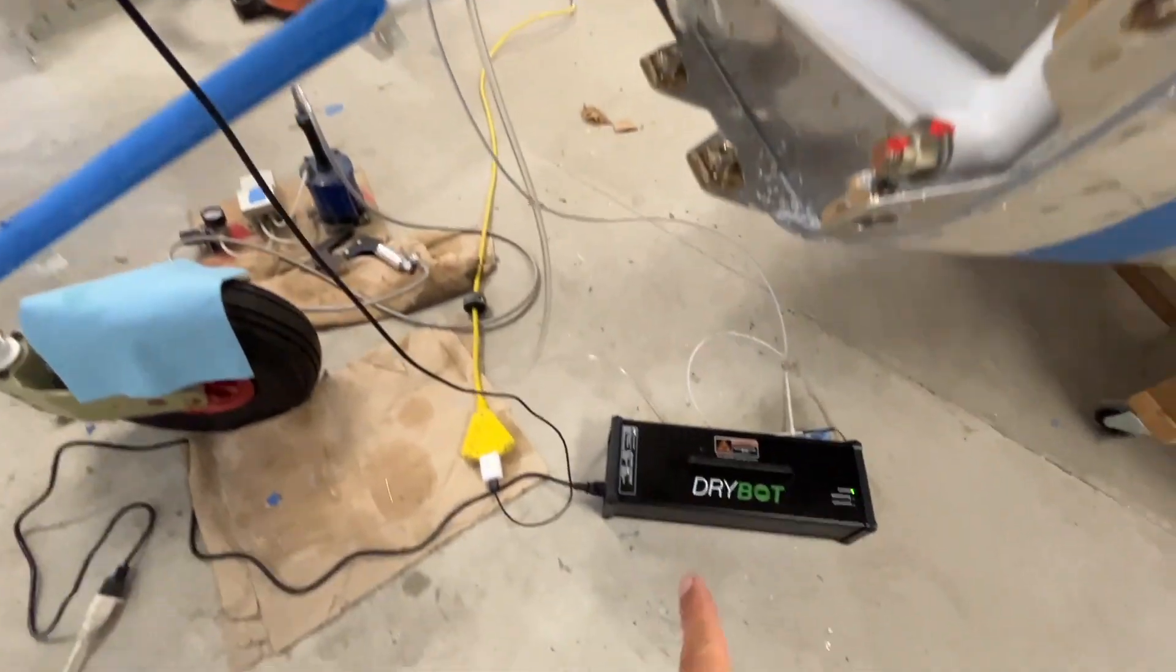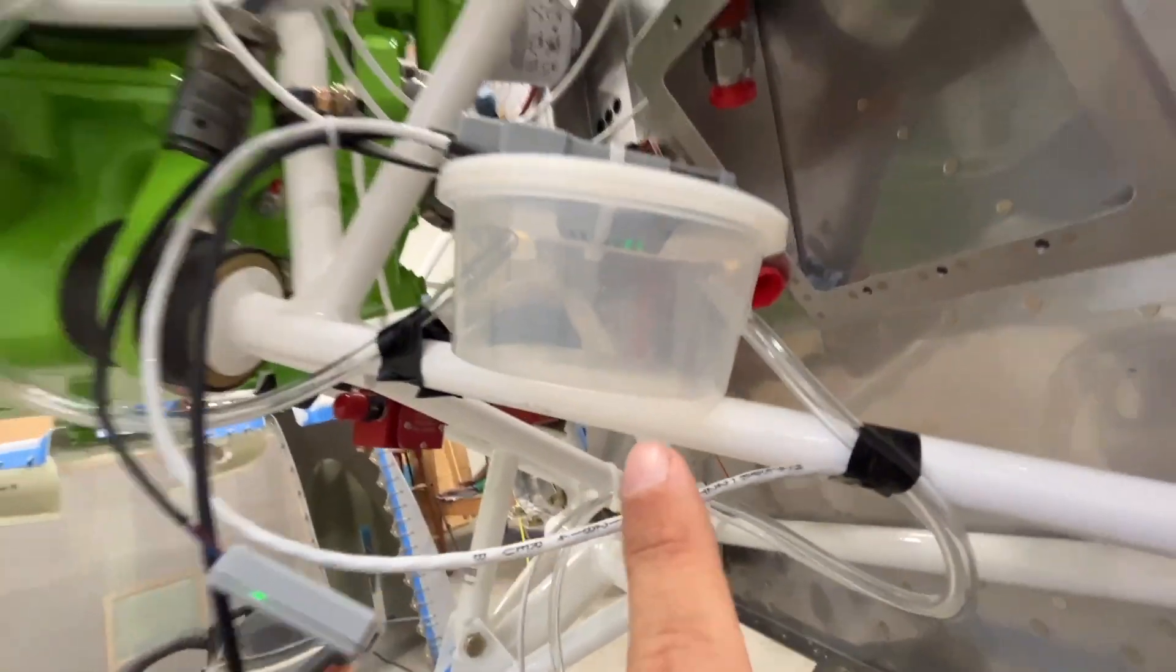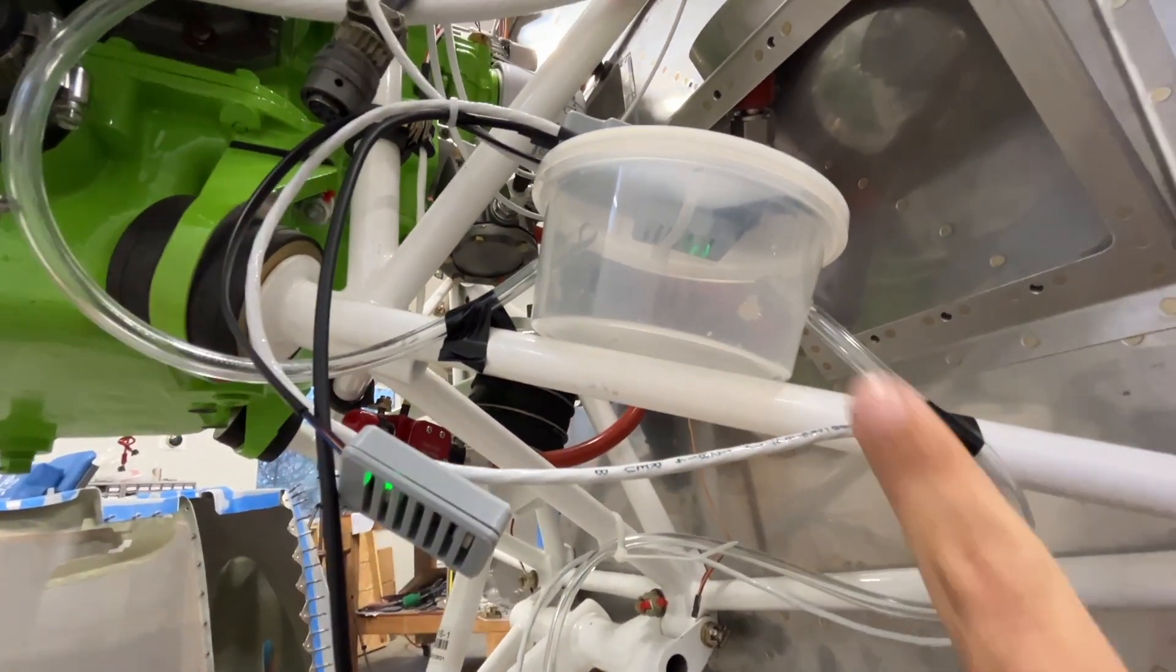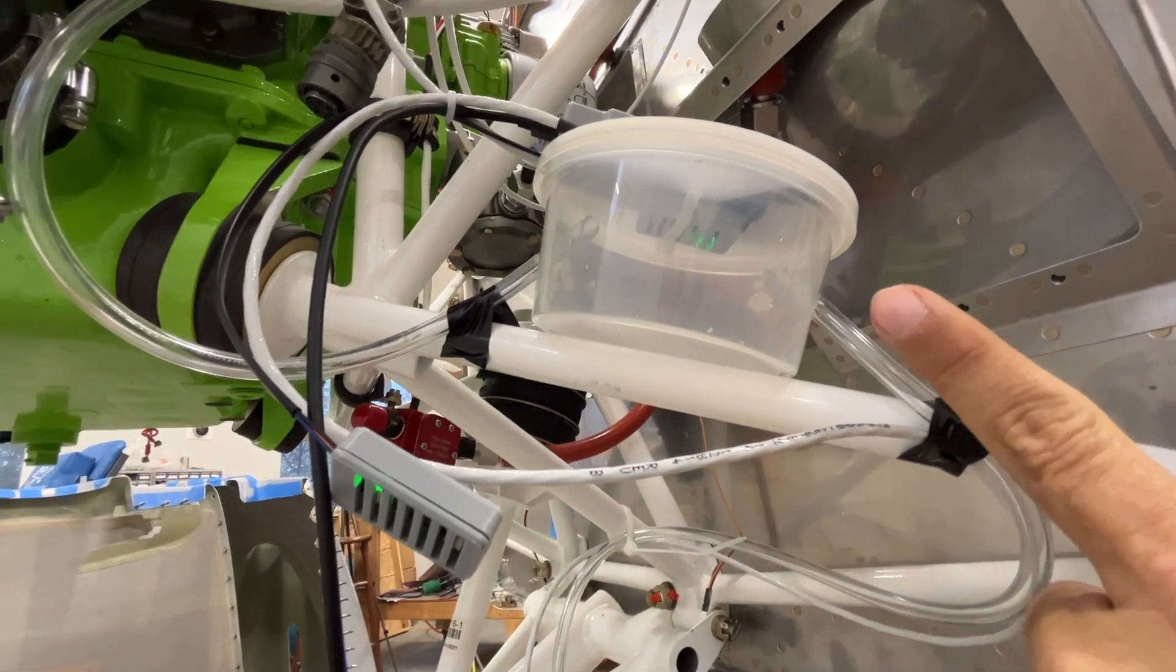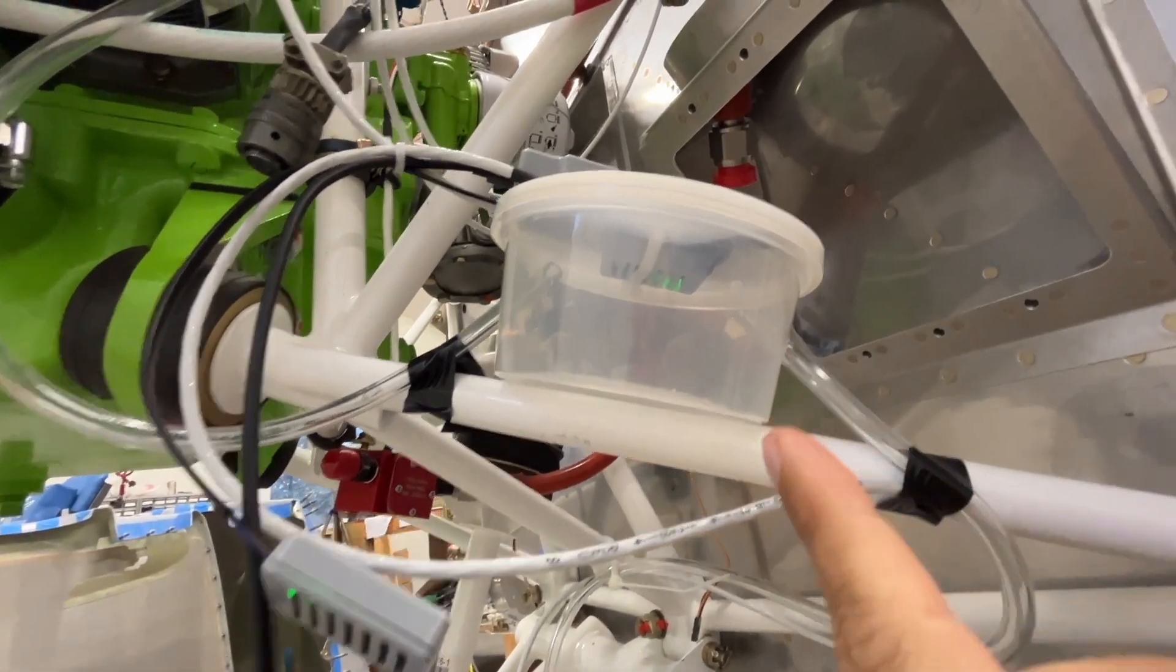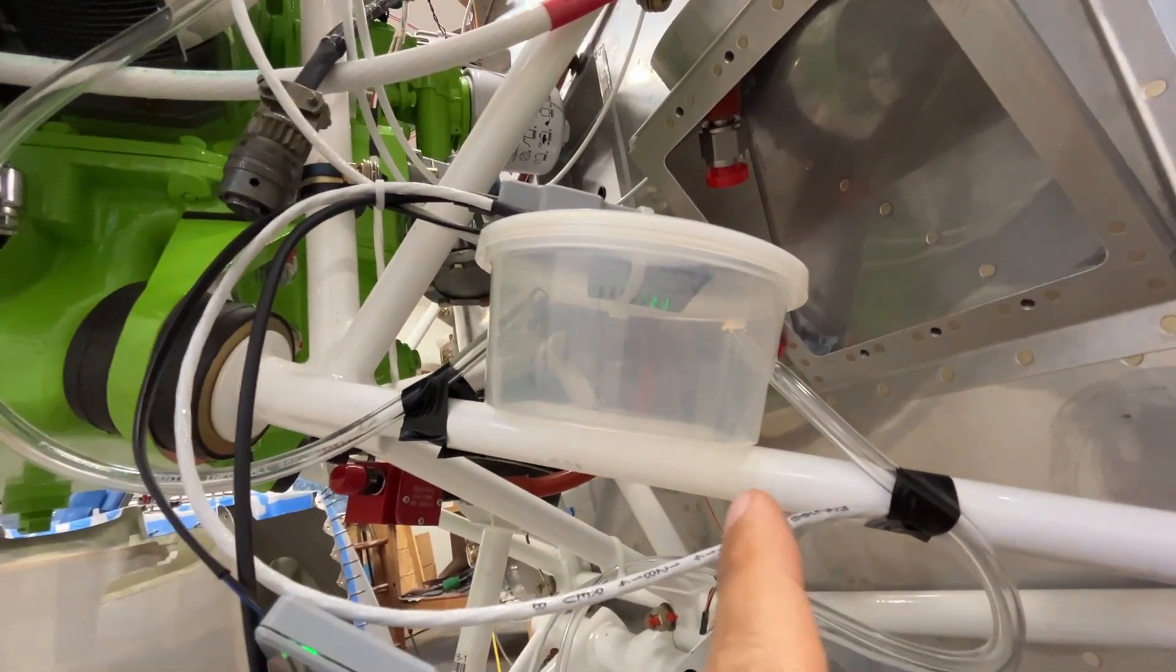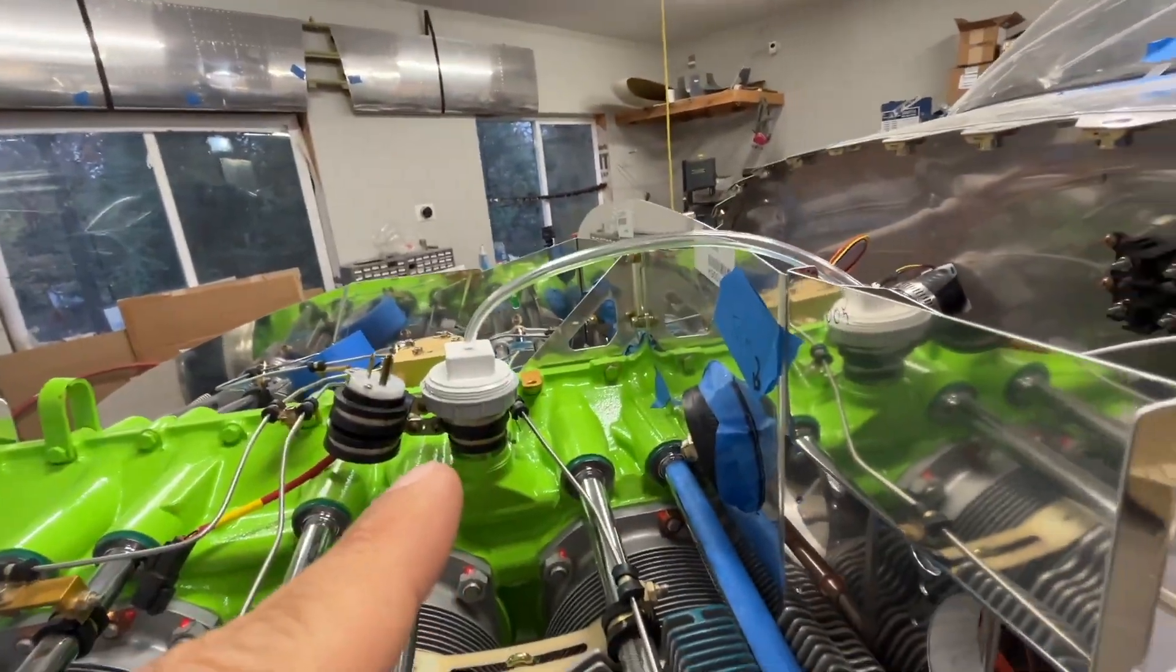And you have the DryBot plumbed into this little, I believe it's a Chinese food container, and there's one of the sensors in there. The tubing goes in, it's pointed basically at the sensor. It doesn't have to because this whole area is going to be full of that air. And then the exit tube comes up and into the engine.